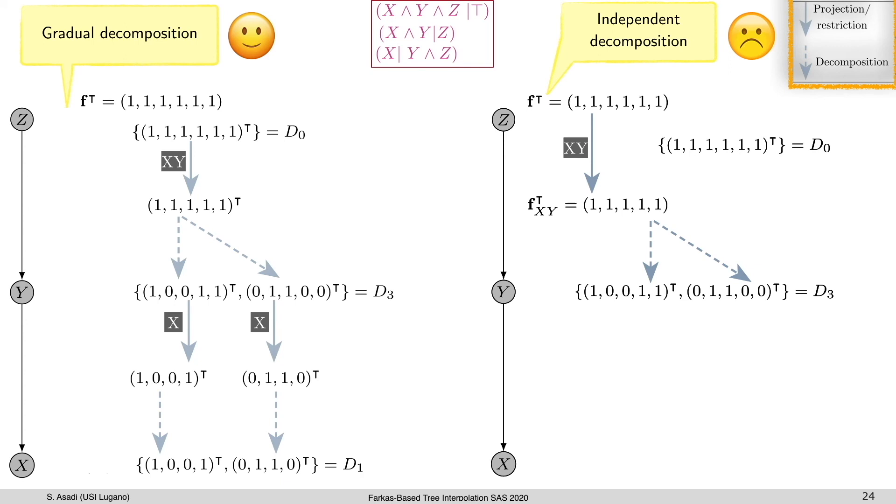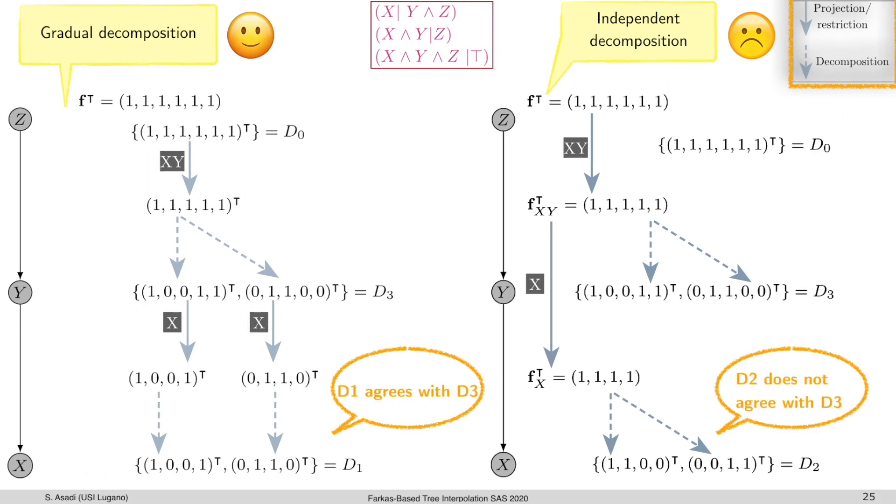On the left, gradual decomposition ensures that the decomposition D1 agrees with D3 by trying to decompose each element of D3 separately. On the right, the decomposition of node x is computed independently such that we decompose directly Fx without involving D3. The decomposition corresponding to node x doesn't care what's happening on its parent, and this is the source of the problem.